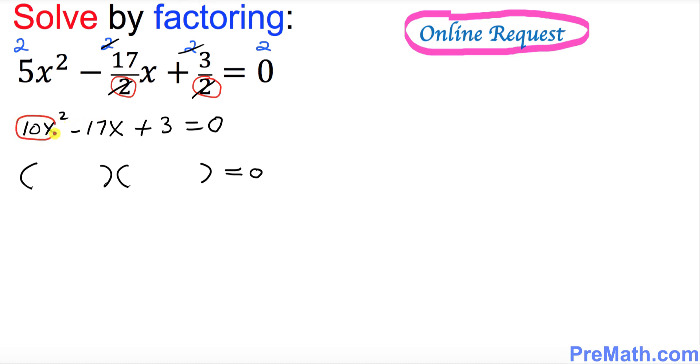Just put down 10x, disregarding the square. Put 10x in the first parentheses and 10x in the second parentheses.